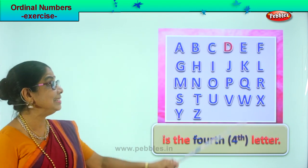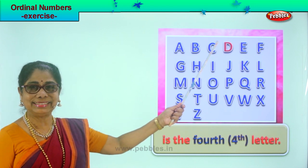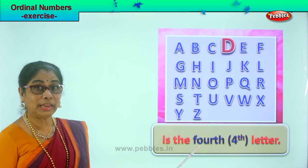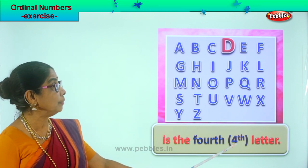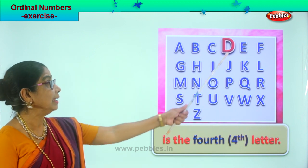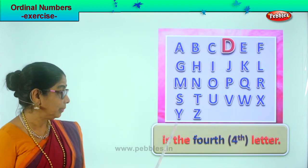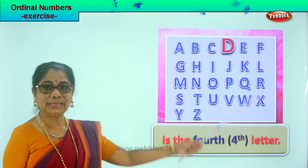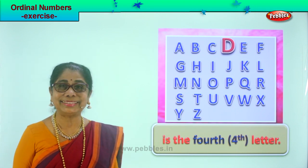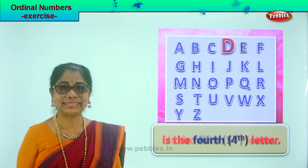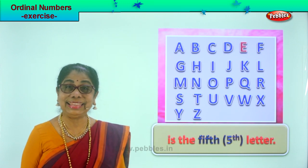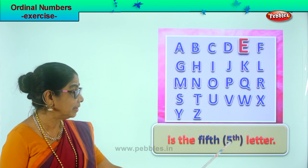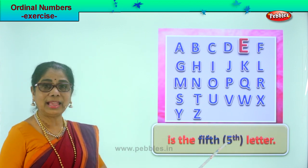The next letter is D. D is the fourth letter. Look at the spelling of fourth, and the representation is number four and TH. Letter D is the fourth letter. Next, E — E is the fifth letter.